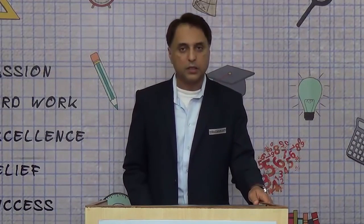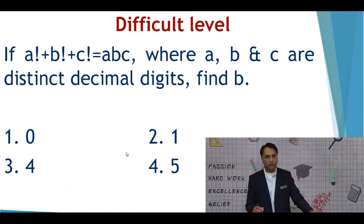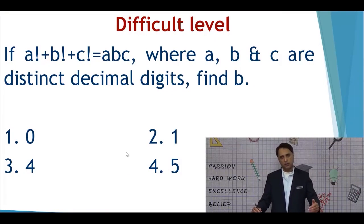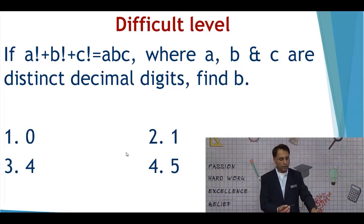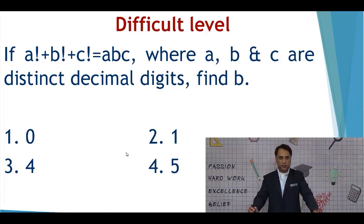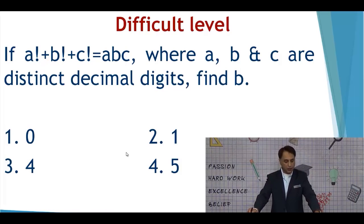Now let's try to apply strategy to a question which is slightly elevated — a difficult level question based on student community feedback. The question: if A factorial plus B factorial plus C factorial equals ABC, where A, B, and C are distinct decimal digits, find B. The options given are 0, 1, 4, and 5.